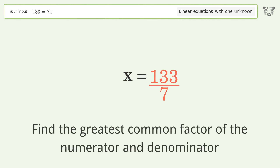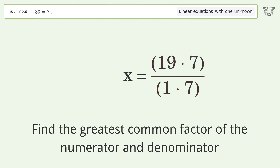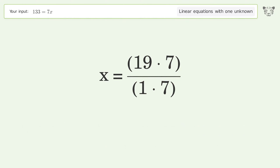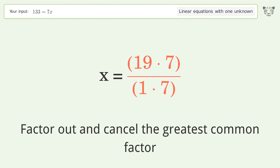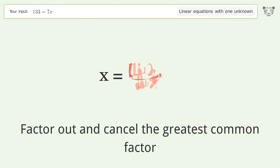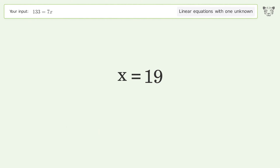Find the greatest common factor of the numerator and denominator. Factor out and cancel the greatest common factor. And so the final result is x equals 19.